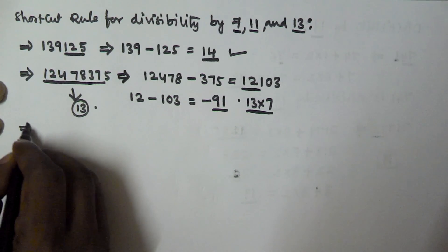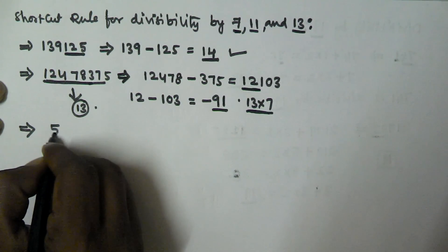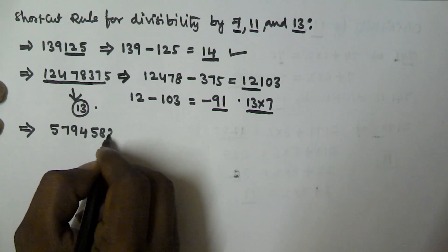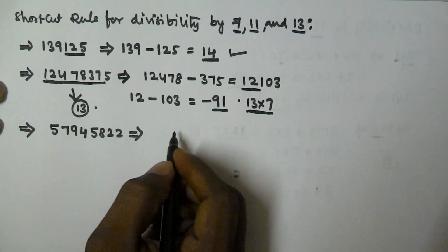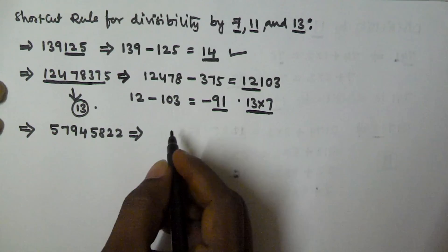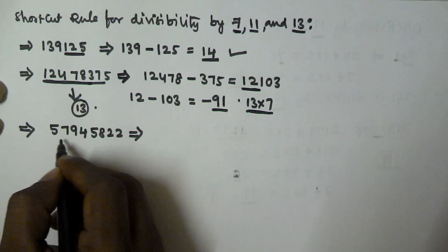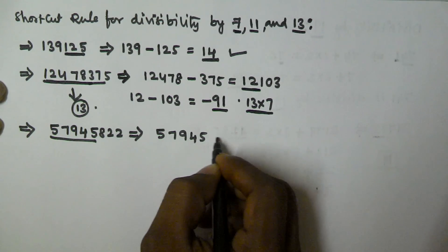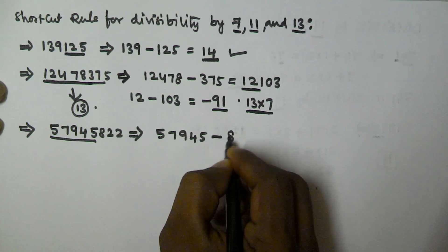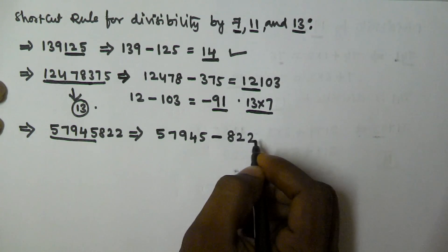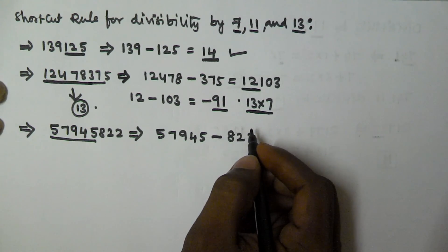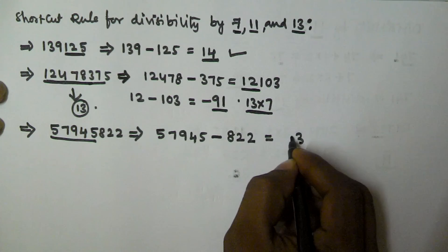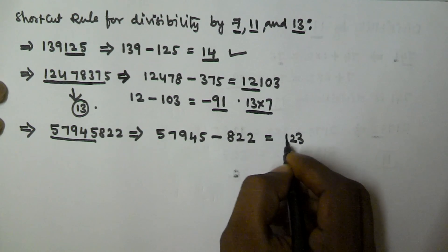Let's see another example: is 57945822 divisible by 11 or not? We take all the digits except the last three digits, that is 57945, and then we subtract the remaining digits, that is 822. If we subtract, we get 57123.